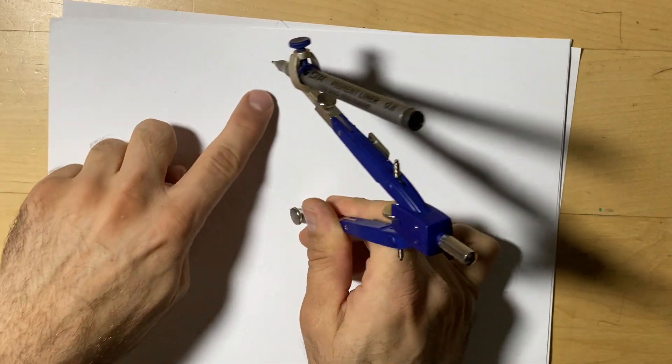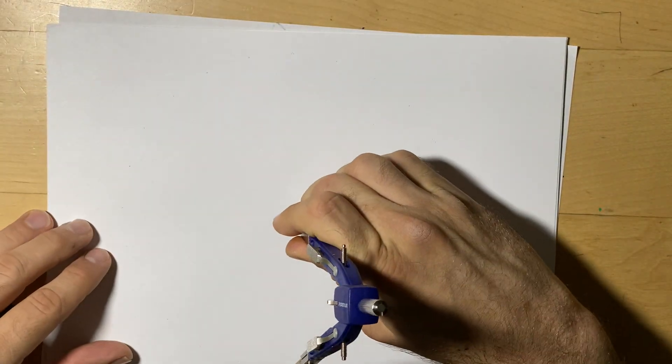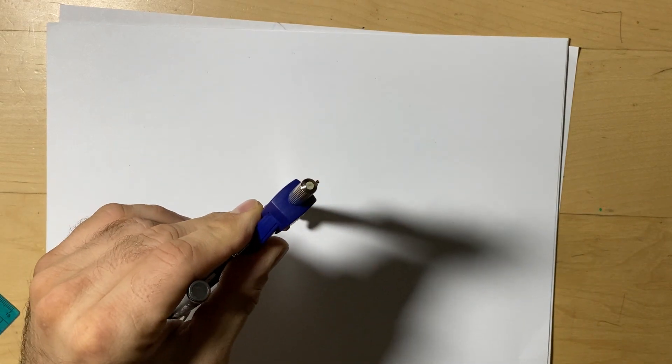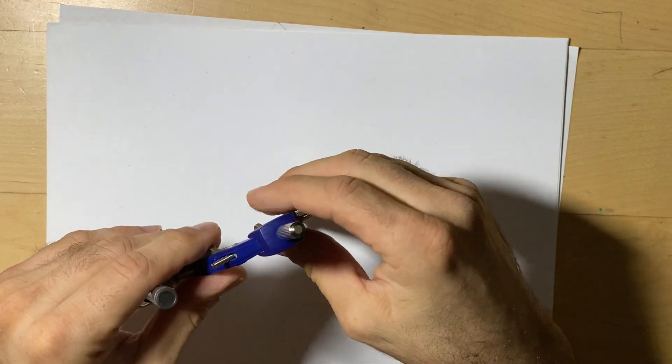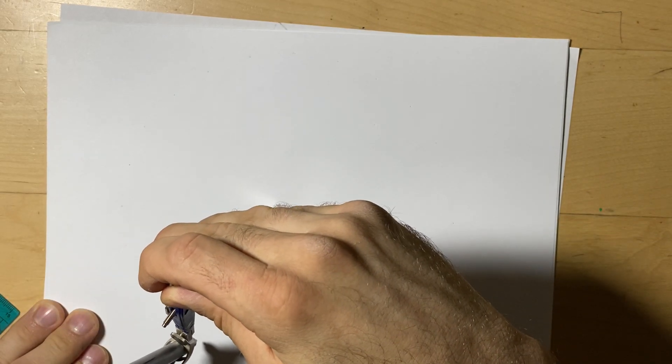Make sure you do your measurements and find the center. We're going to put the point of the compass in the center and adjust our compass almost the entire page. You can make it as big as you want. The bigger the compass is open, the easier it tends to be to work with. Smaller circles tend to be more difficult to make.